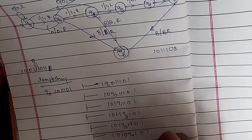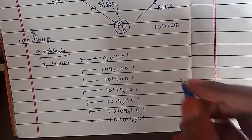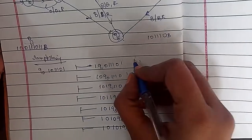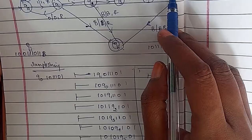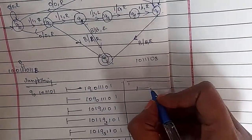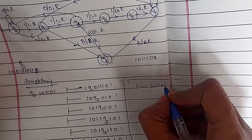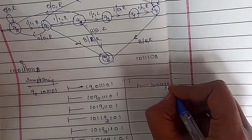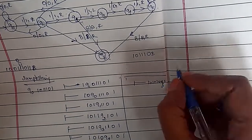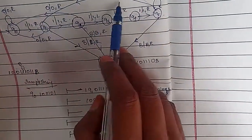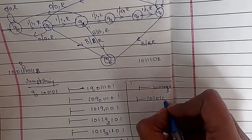Q5 on zero stays on the same state but moves right direction. Then Q5 on one transitions to Q1. So: one zero one zero Q1 zero one. Moving right direction you continue.